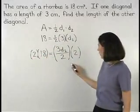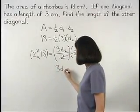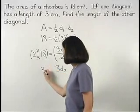On the right side, the 2's cancel and we're left with 3d2. And on the left side, 2 times 18 is 36.